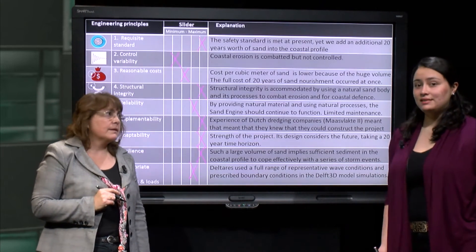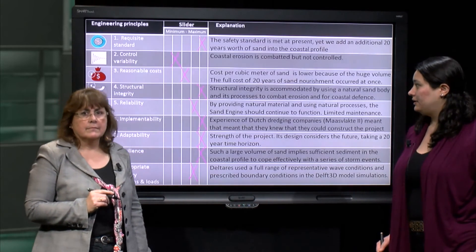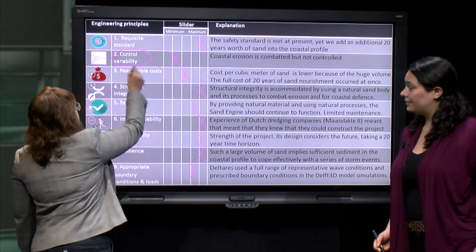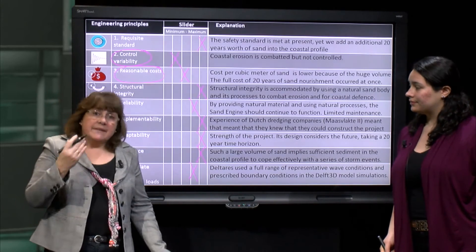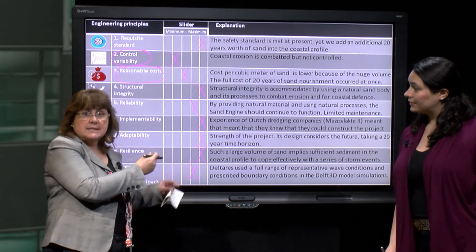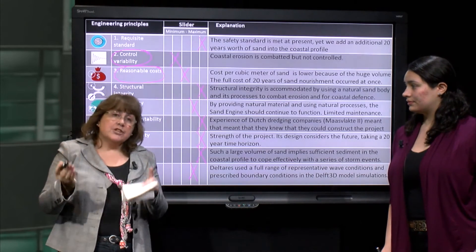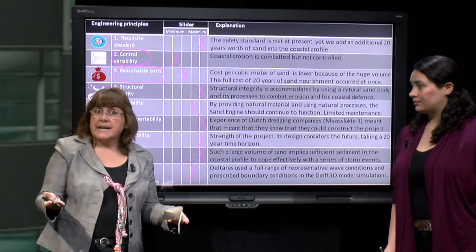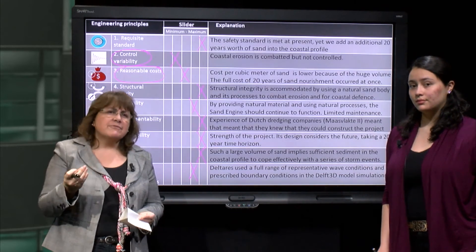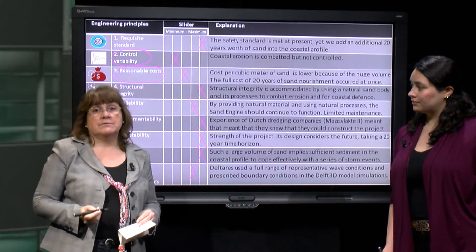The sand engine did quite well in most engineering principles. However, it did not score so high in control of variability and reasonable costs. That's because the project involved a series of trade-offs: by limiting the control of variability, we gained adaptability and resilience. In terms of the cost issue, the project is financed by a coalition of stakeholders rather than only the primary clients. Although this funding strategy is very difficult to achieve, it's precisely why this innovative project could be realised.